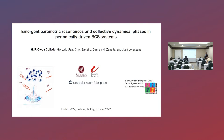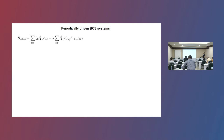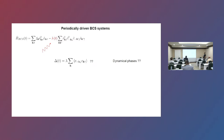I start with this very simple Hamiltonian, the BCS Hamiltonian. The first part is the kinetic energy of the electron. The second part is the pairing interaction between electrons with opposite momentum and spins. Then we put a periodic perturbation — for example, in the pairing interaction of the system — and the question is what happens with the superconducting order parameter and what kind of dynamical phases we can get by doing this modulation.